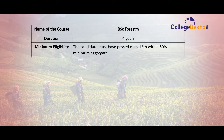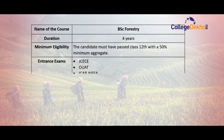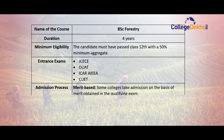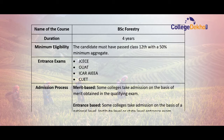Let's move ahead to know the BSc Forestry course highlights. Name of the course: BSc Forestry. Duration: four years. Minimum eligibility: the candidate must have passed class 12th with a minimum of 50% marks. Entrance exams: JCECE, OUAT, ICAR AIEA, CUET. Admission process: merit-based and entrance-based.